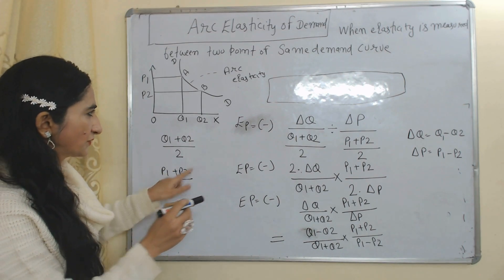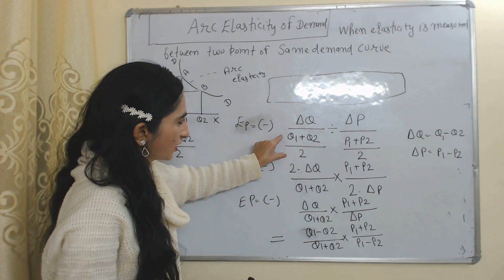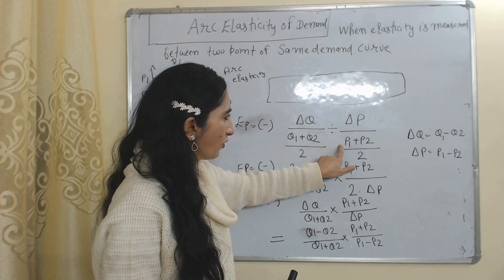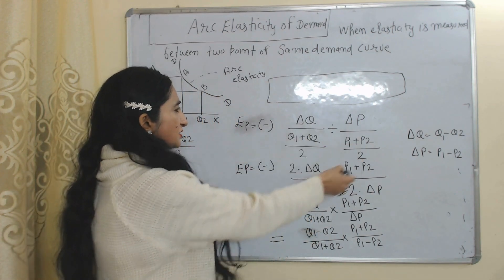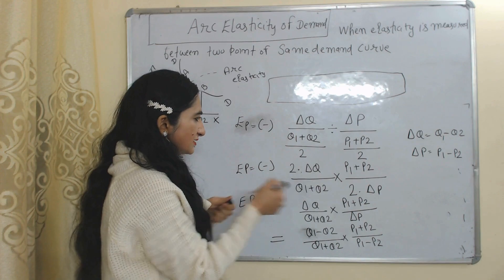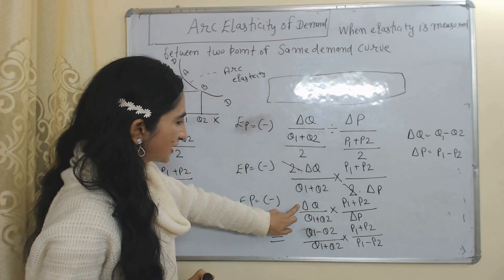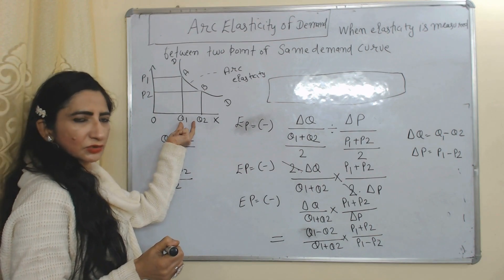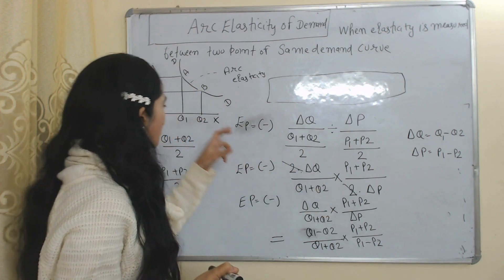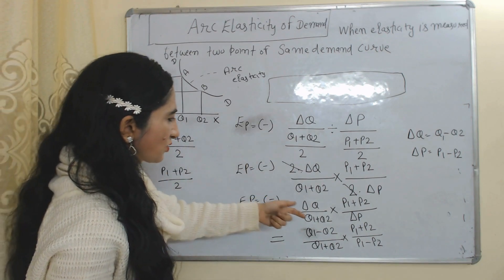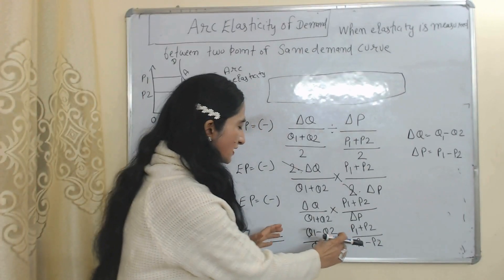We derive the formula as Delta Q over (Q1 plus Q2)/2, divided by Delta P over (P1 plus P2)/2. Writing this in multiplication form, the 2s cancel with each other. As Delta Q represents the change between Q1 and Q2, we can write Q1 minus Q2 in place of Delta Q. Similarly, Delta P represents the change between P1 and P2, so we write P1 minus P2 in place of Delta P. After doing this, we get our final formula to measure arc elasticity of demand.